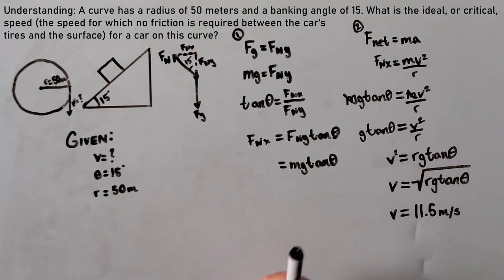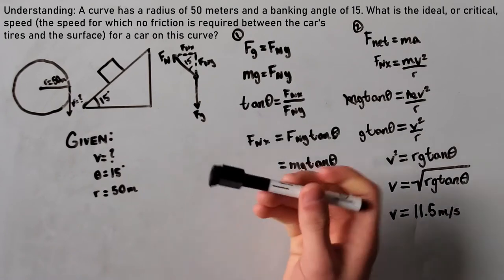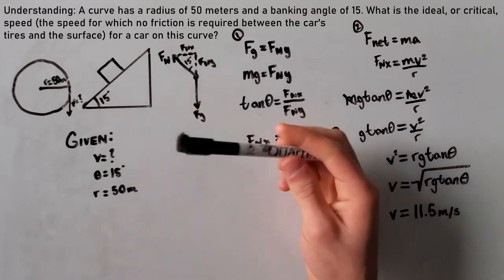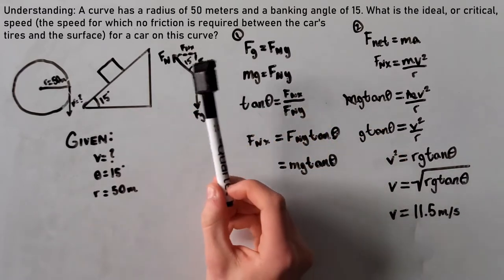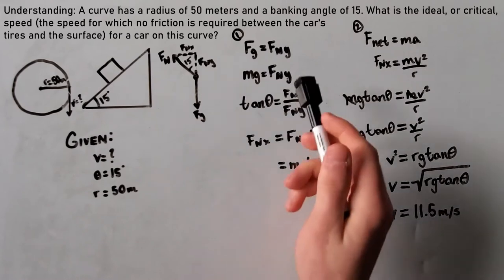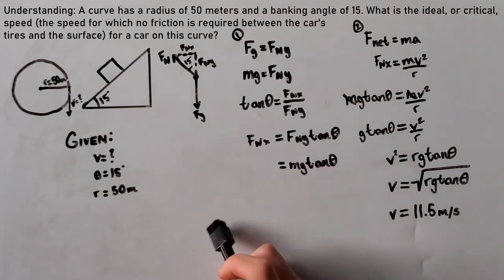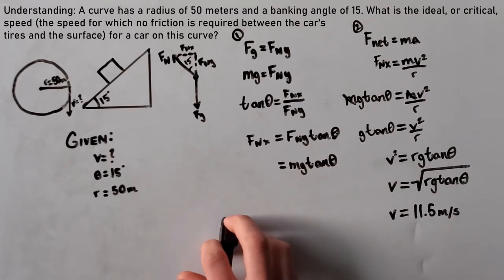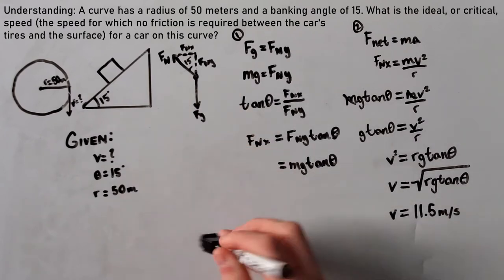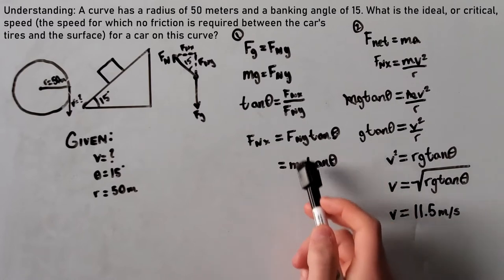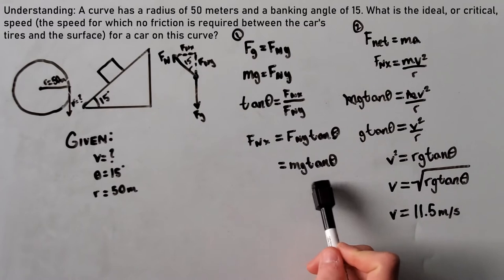Step one would be to find what the centripetal force would be. What is the force that is driving the car and pulling it towards the center? If we look at our free-body diagram, which force is going in this direction towards the center? It would be our normal force in the x direction. We have our force of gravity equals our normal force in the y direction. Our force of gravity is mg, so mg equals our force of normal in the y direction. Then, we have to solve for our fnx. Using trigonometry, we solve for fnx equals fny tangent theta, which equals mg tangent theta.